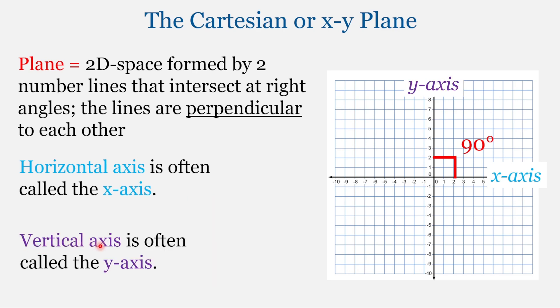Now the vertical axis is sometimes called the y-axis. And again, vertical is going up and down. One way to remember vertical is that vertical starts with a v, and that v kind of points up, much like the vertical axis goes up and down.